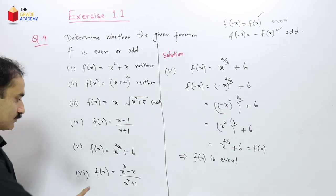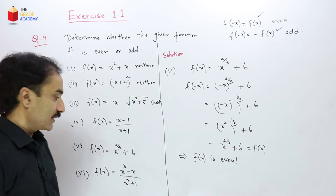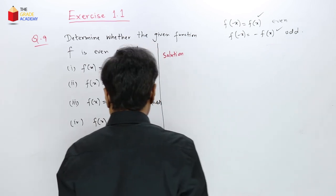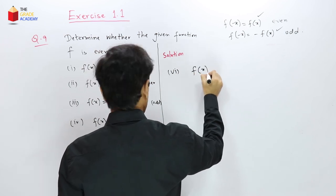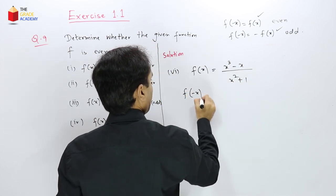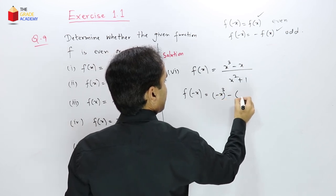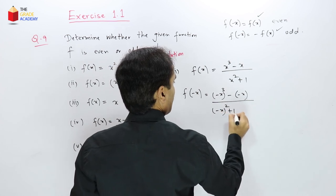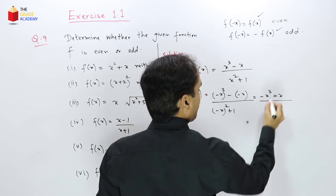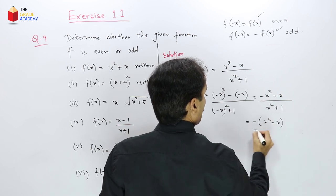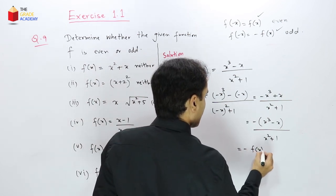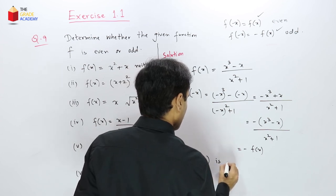For f(x) = (x³ − x)/(x²+1): substituting −x gives (−x³ + x)/(x²+1) = −(x³−x)/(x²+1) = −f(x). Since f(−x) = −f(x), this function is odd.